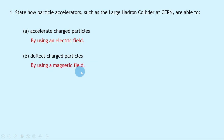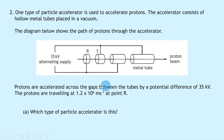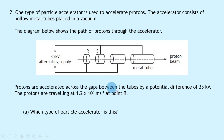Question two says one type of particle accelerator is used to accelerate protons. The accelerator consists of hollow metal tubes placed in a vacuum. The diagram shows the path of protons through the accelerator. We have a 35 kilovolt alternating supply, two metal tubes R and S that are labeled, and a proton beam traveling through the accelerator. Protons are accelerated across the gaps between the tubes by a potential difference of 35 kilovolts.